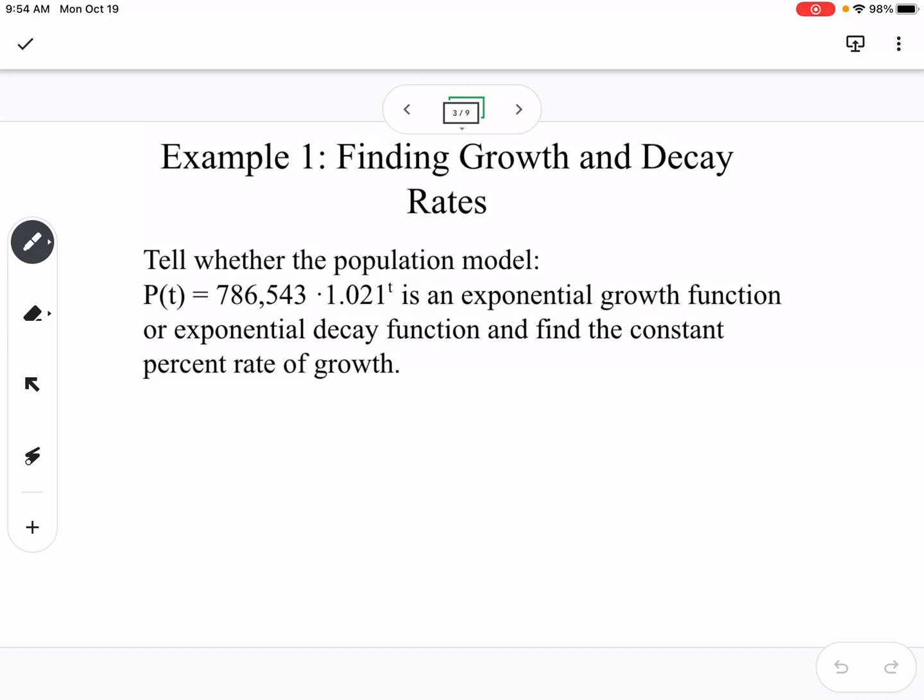For our first example, it says tell whether the population model P of T equals 786,543 times 1.021 raised to the T is an exponential growth or exponential decay, and find the constant percent rate of growth.